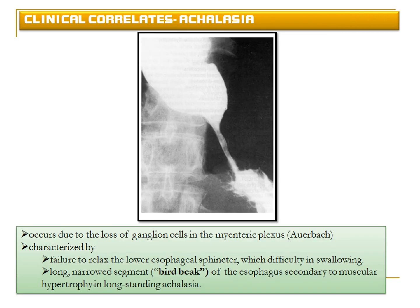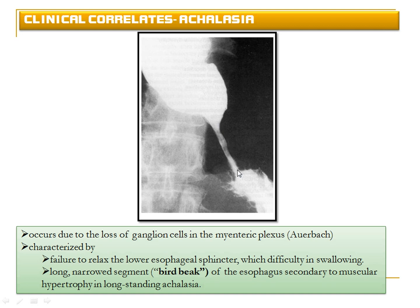The next abnormality is achalasia, caused by loss of the myenteric (Auerbach's) plexus ganglion. Without these ganglion cells, the gut tube cannot relax after constriction due to absence of the parasympathetic nervous system causing relaxation. The aganglionic segment remains constricted, and the segment cranial to it undergoes muscular hypertrophy. On barium swallow X-ray, this constricted segment appears as a bird-beak structure.